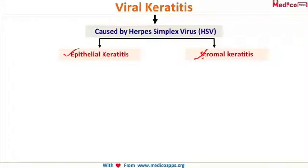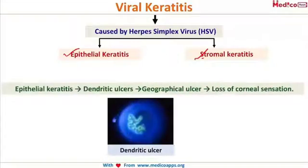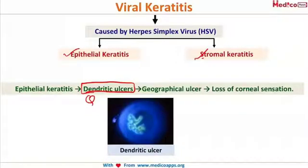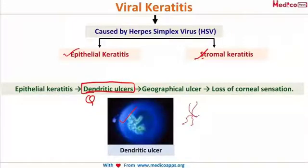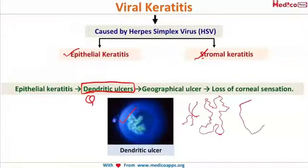Both epithelial and stromal HSV keratitis are present in the cornea. The epithelial keratitis is characterized by dendritic ulcers — these are true dendrites. We have seen a pseudodendrite in acanthamoeba, so the dendrites that occur in viral keratitis are called true dendrites. You can see a beautiful branching pattern of the ulcer in the image.